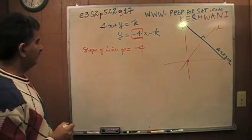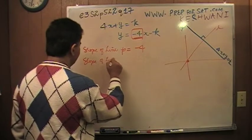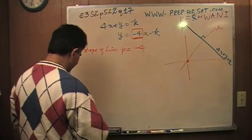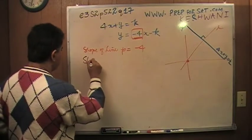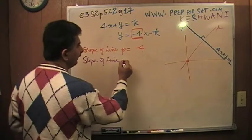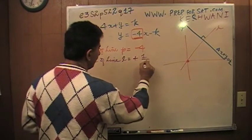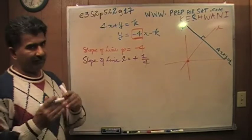If the slope of the line P is negative 4, then slope of line L would have to be positive 1 quarter, because their product has to be negative 1, because they are perpendicular to each other.